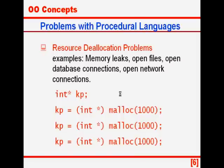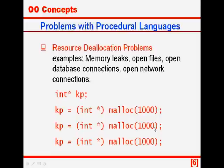Another big problem with procedural languages is the resource deallocation problem. Resources can be anything from memory to files to open database connections and network connections. In this code, we have declared int star kp and allocated a block of 1000 bytes to pointer kp. Again we allocate another 1000 bytes to kp, and yet again 1000 bytes to kb. At the end, 2000 bytes of memory becomes unavailable, causing what is known as a memory leak — memory allocated but unusable because we have lost the pointer to that memory.